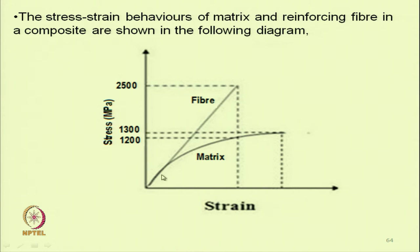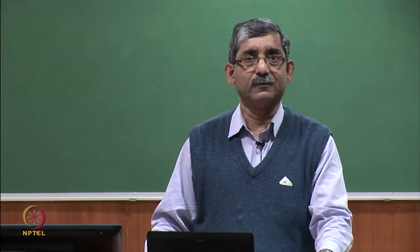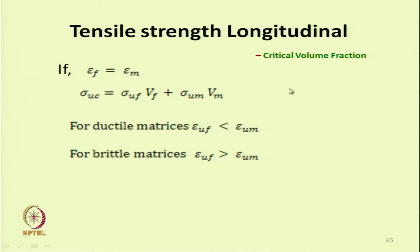This is a typical example of how the calculation is done. 2500 MPa is the ultimate stress of the reinforcing material, 1300 MPa is the ultimate stress of the matrix, and 1200 MPa is the stress carried by the matrix when the fibres are breaking. This is used to calculate the critical volume fraction. The ultimate strength of composite sigma_uc is the addition of the stress by the fibre and stress by the matrix.